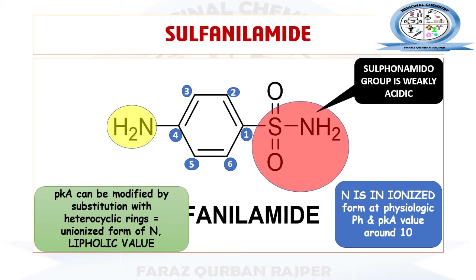Different heterocyclic rings can be substituted at the amino functional group to form various N1 derivatives of sulfanilamide. These derivatives are basically formed to adjust the pKa value, to obtain drugs with good therapeutic activity, and to reduce the chances of formation of what we call crystalluria.